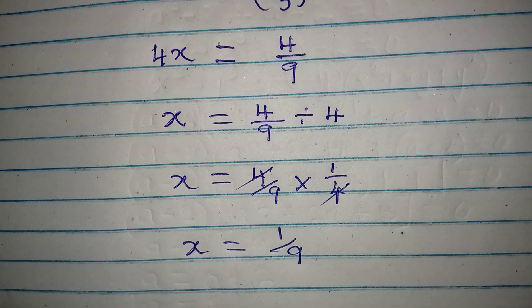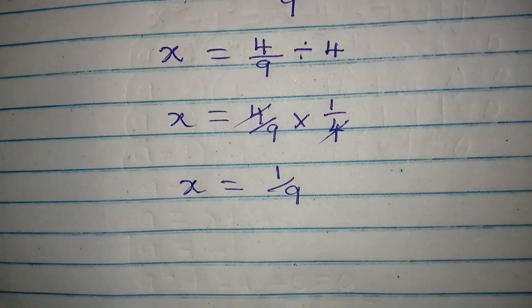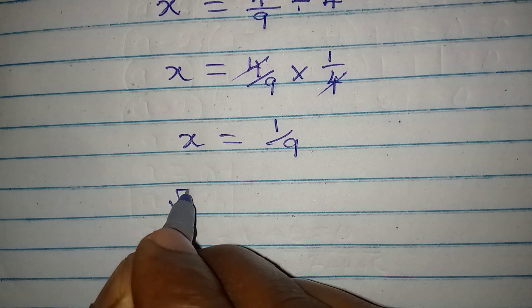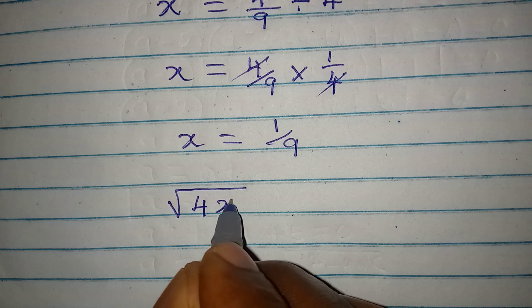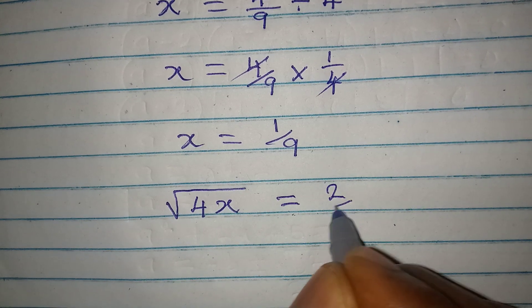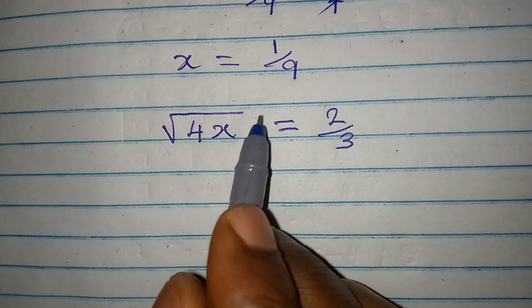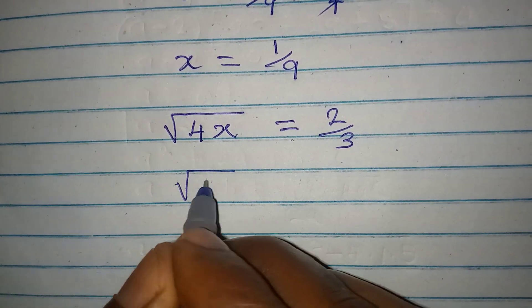But then are we correct? Let's put this back into the problem quickly. The original equation is square root of 4x to be equal to 2 over 3. Now put in the value of x as square root of 4 into 1 over 9, close this up.